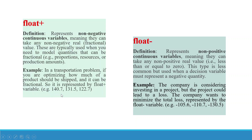Example values for float plus are 140.7, 131.5, and 122.7. Float minus represents a non-positive continuous variable, meaning they can take any non-positive real values — that is, less than or equal to zero. Remember: float minus means negative values only, float plus means positive values only. This type is less common but used when a decision variable must represent a negative quantity, such as when a company wants to minimize a total loss. Example values are -105.6, -110.7, and -130.5.